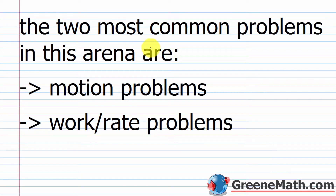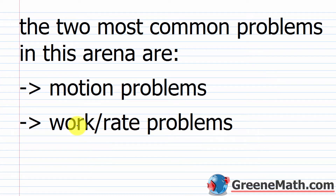The two most common problems in this arena are going to be motion word problems, which we saw back at the beginning of Algebra 1, using the distance formula: distance is equal to rate of speed times the amount of time traveled. And then something that's new to us is going to be work rate problems, or rate of work problems. These are really easy to solve — we'll get to them at the very end of the lesson.